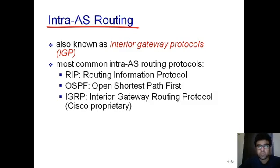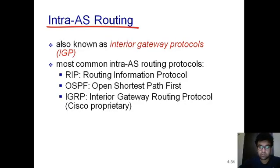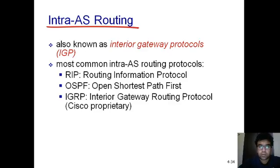Welcome to the course on computer networks part 2. Today we are going to discuss routing protocols used in the internet, starting with intra-domain routing protocols which are used inside the autonomous system to provide routing to various routers. An autonomous system is a collection of routers under the same administrative and technical support, created to provide proper control over the system.